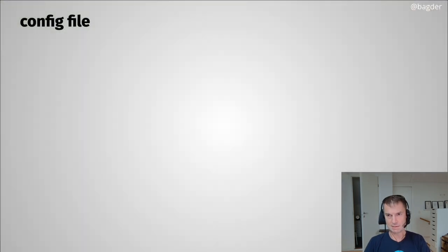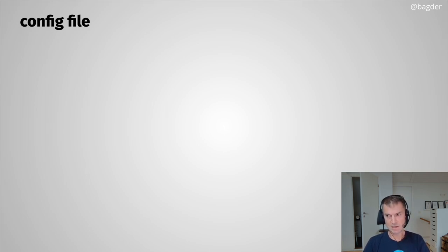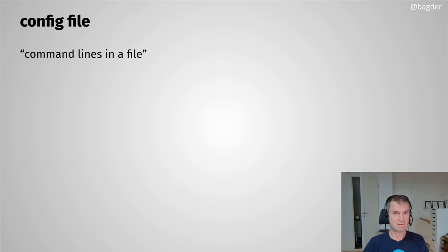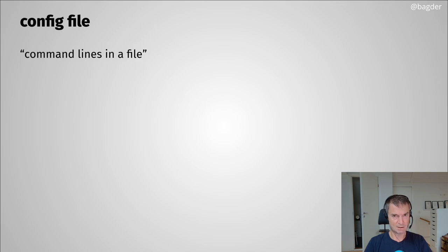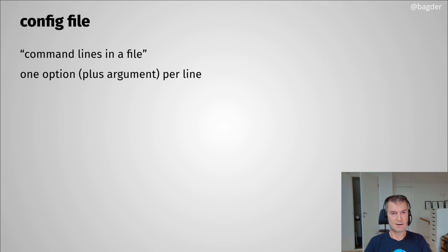The config file concept in curl is a long-standing concept — we introduced it well over 20 years ago. It's basically a set of command line options in a text file. It's a way to put command line options into a file and have curl read them from that file instead of from the command line. You write it with one option and its possible argument per line in the text file.